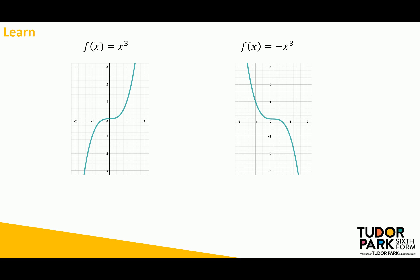These are the general forms of cubic functions. This cubic doesn't look like a wobbly cubic because it has a repeated root at zero three times over, which creates a point of inflection. Wherever we have something raised to the power of three, it gives us this point of inflection, meaning the graph starts above and finishes below. Here is a negative x-cubed graph — again we should know this basic form, and again there is a point of inflection because of the repeated root three times at zero.